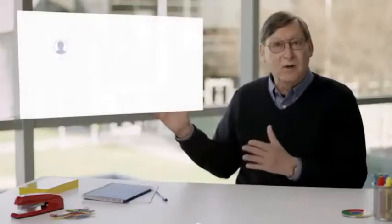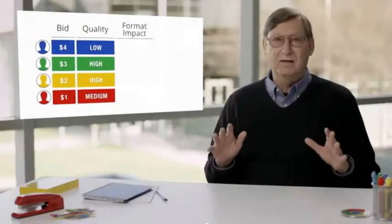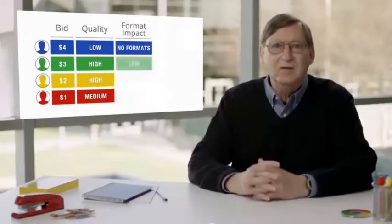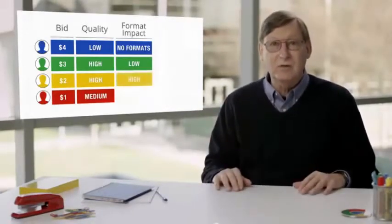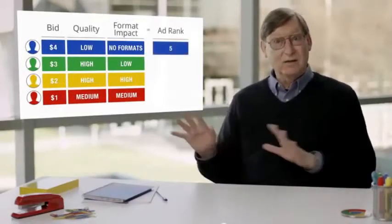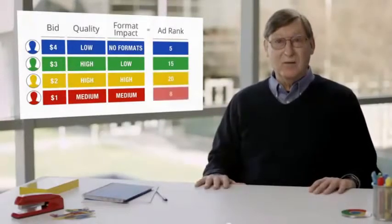Let's go back to our four sample ad buyers and see how their ad rank compares. Here are our four advertisers bidding $4, $3, $2, and $1. Their ads had different quality: low, high, high, and medium. They also implied different formats with varying impact. The first ad has no formats enabled, so it has no expected format impact. The second is only eligible for one format and has a low expected format impact. The third is eligible for several extensions and has a high expected impact, and the last has medium impact. So in this example, the first ad has an ad rank of 5, the next has an ad rank of 15, the third has an ad rank of 20, and the last has an ad rank of 8.